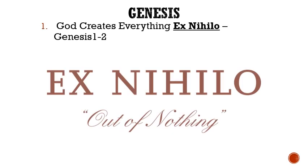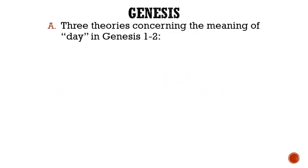Now let's begin by looking at Roman numeral 1: God creates everything ex nihilo, or out of nothing. Before we jump into Genesis chapter 1 and chapter 2, let's discuss the three theories concerning the meaning of the word day in Genesis 1 and 2.